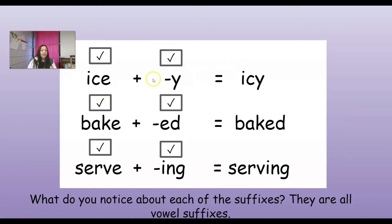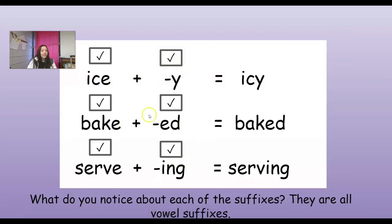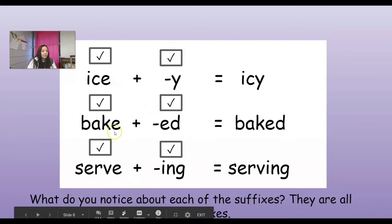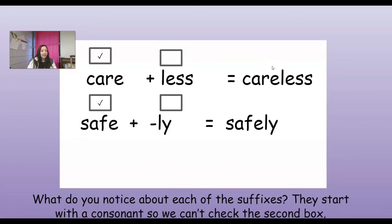Y by itself is just a vowel. ED begins with a vowel - it begins with E. ING begins with a vowel - it starts with an I. So it's a vowel suffix. So in all of these, when we add that vowel suffix, the vowel at the end of the word before actually gets dropped.